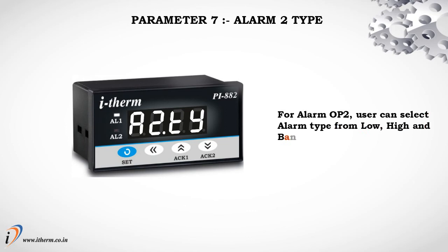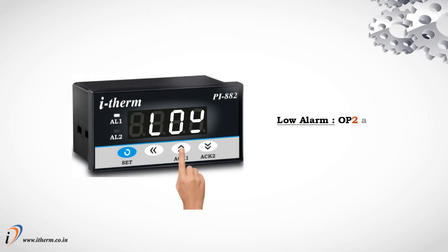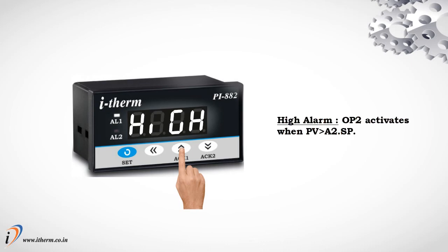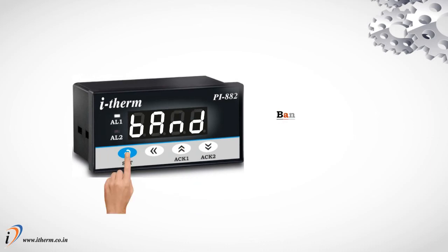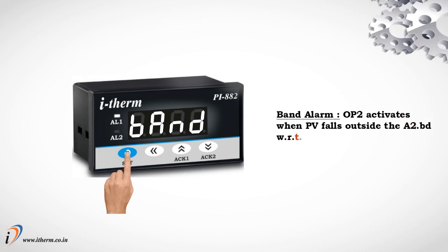Parameter 7: Alarm 2 Type. For alarm output 2, the user can select alarm type from Low, High, or Band. Low alarm: output 2 activates when process value is less than alarm 2 setpoint. High alarm: output 2 activates when process value is greater than alarm 2 setpoint. Band alarm: output 2 activates when process value falls outside the alarm 2 band with respect to alarm 2 setpoint in either direction.